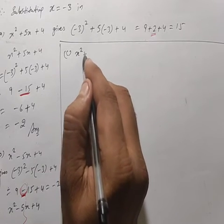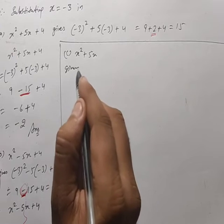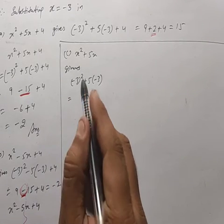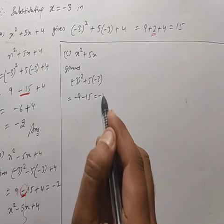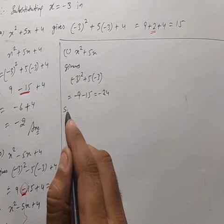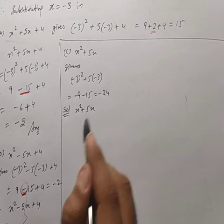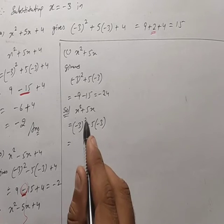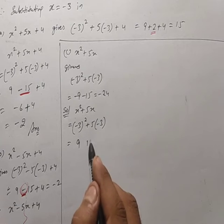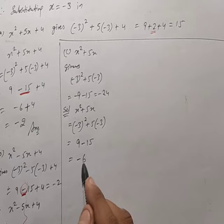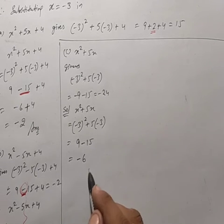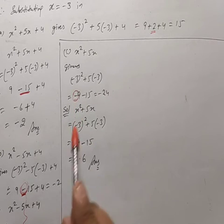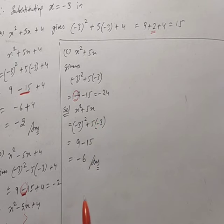Question 10(c): x²+5x with x=-3 gives -9-15 = -24. Solution: (-3)²+5(-3) = 9-15 = -6. The error: (-3)² = +9, not -9. The correction is to write +9 instead of -9, giving 9-15 = -6.